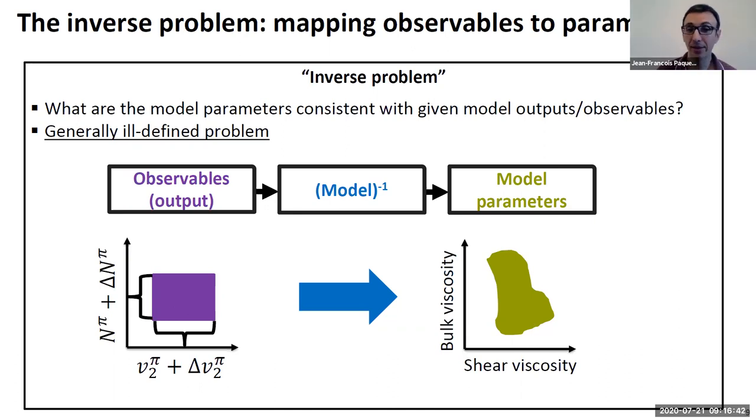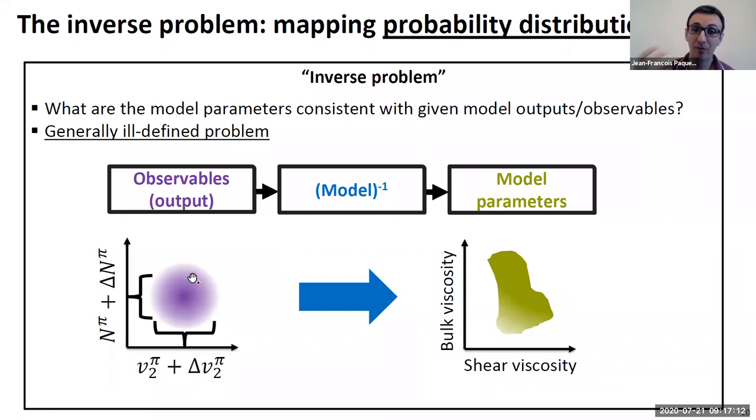What makes it even more complicated is when we say V2 is 0.04 plus or minus 0.02, we don't mean V2 is equally likely to be anywhere between 0.02 and 0.06. We're saying the most likely value is probably 0.04, with probably a Gaussian distribution where other values are possible but less likely than the mean. What you really have when you have measurements is a probability distribution for your observable to take a certain value. We're trying to map this probability distribution onto your model parameters. What you find ultimately is a probability distribution for your model parameters. Everything you obtain from Bayesian parameter estimation is probabilistic constraints on your model parameters.